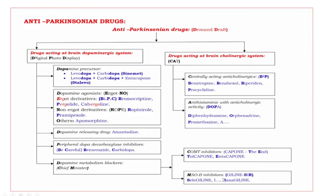Next, M stands for MAOB inhibitors. These end with the suffix '-giline.' The drugs use the mnemonic 'SER,' bold letters S and R. S: selegiline. R: rasagiline.